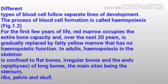For the first few years of life, red marrow occupies the entire bone capacity, and over the next 20 years is gradually replaced by fatty yellow marrow that has no hematopoietic function. In adults, hematopoiesis in the skeleton is confined to flat bones, irregular bones, and the epiphyses of long bones — the main sites being the sternum, ribs, pelvis, and skull.